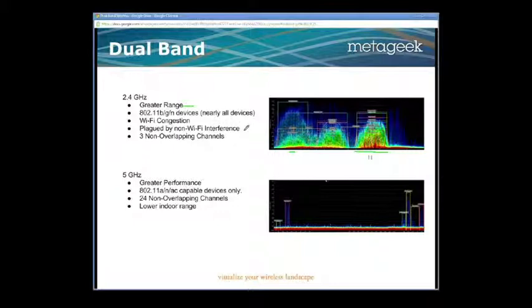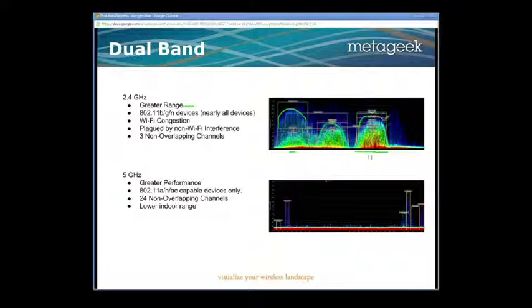The 2.4GHz is plagued by non-Wi-Fi interference. In the early days of wireless, they allowed any wireless device to transmit in the 2.4 or 5GHz, and since the 2.4GHz had better range, everyone went there first. Unfortunately, in the 2.4GHz you only have three non-overlapping channels: channel 1, channel 6, and channel 11. So if there was interference on any of these channels, that only leaves you two other channels to choose from.